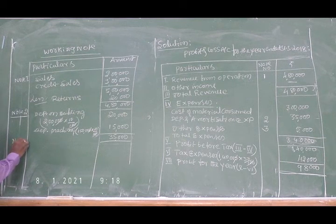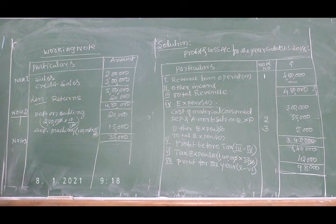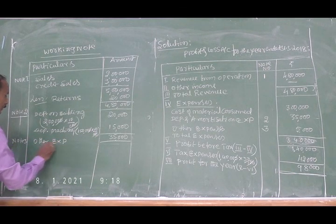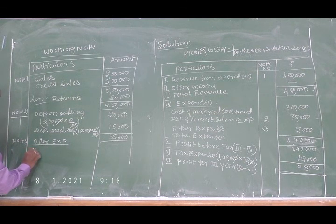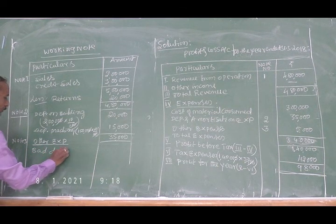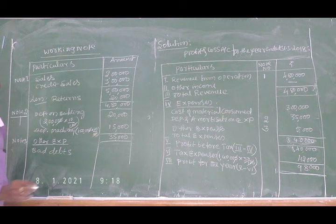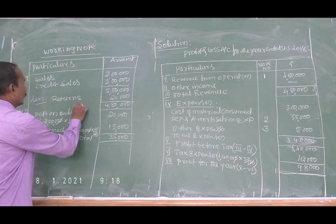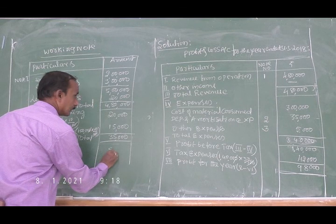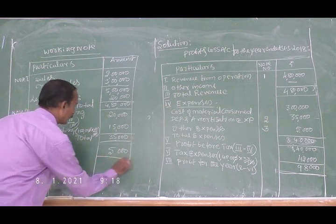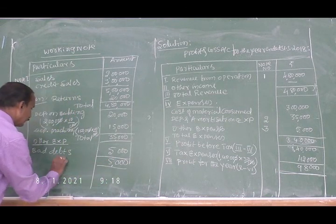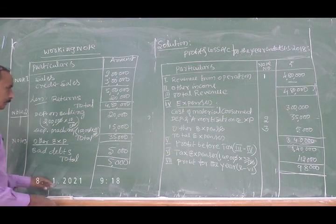Note number three — other expenses: bad debts five thousand. Total: five thousand. That is all.